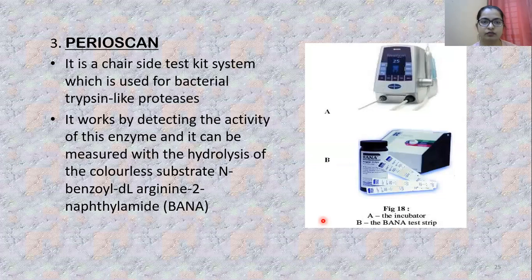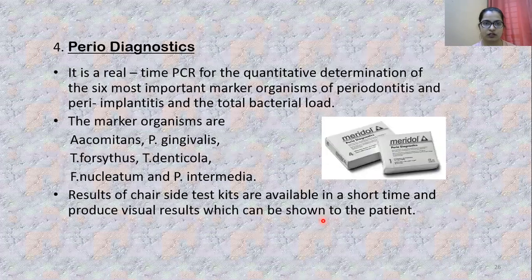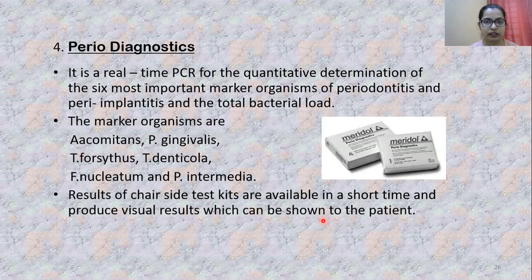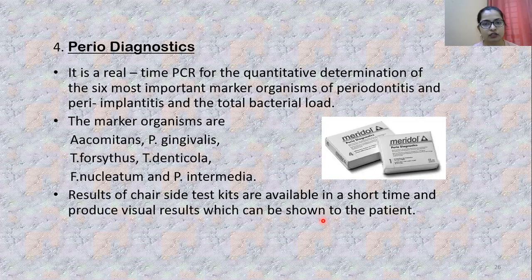Next is a kit used for bacterial proteins like proteases; it mainly works by detecting the activity of this particular enzyme. Another kit uses real-time PCR — results are seen visually and can be shown to the patient, indicating the condition of that particular area, total bacterial load and the progression of disease accordingly.